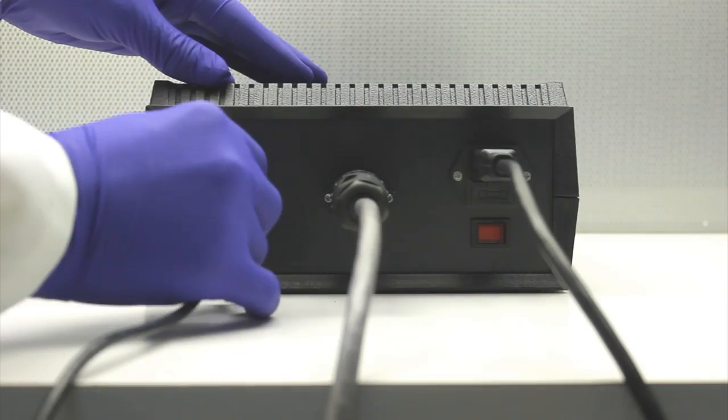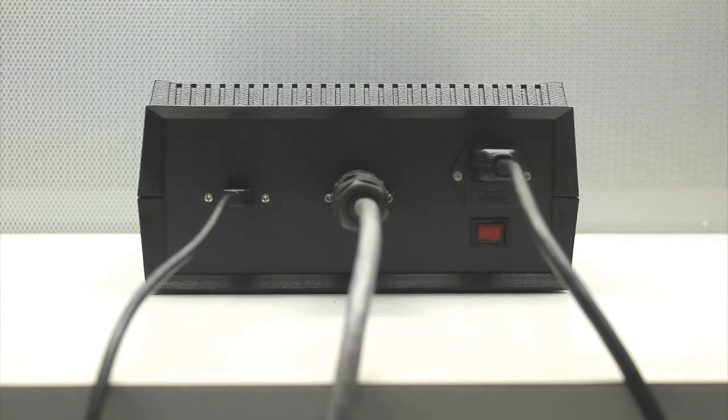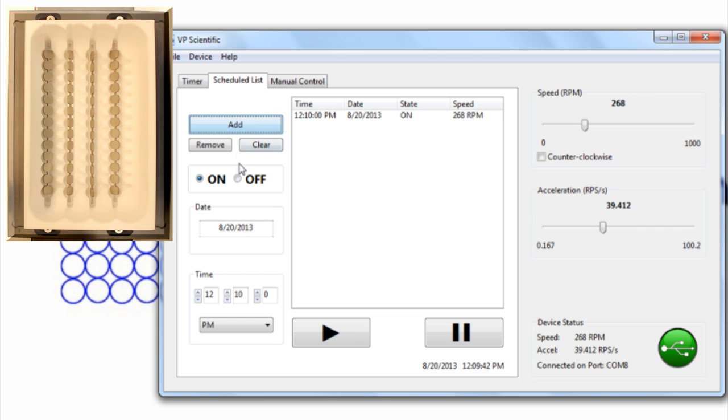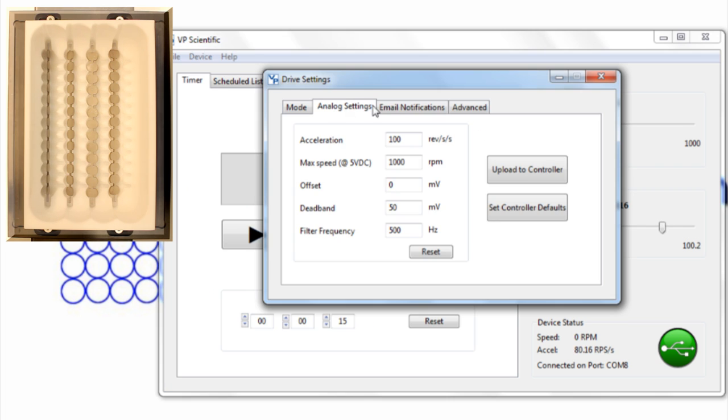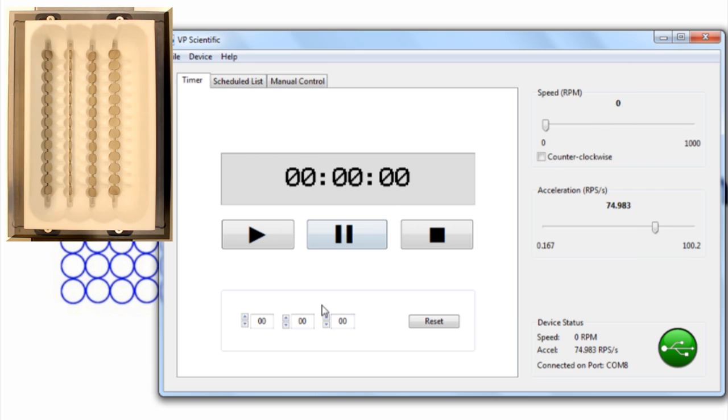They can also be controlled by computer, making it ideal for robotic integrations. This easy-to-use software allows users to set up schedules and timed runs, receive email alerts, determine acceleration and deceleration rates, determine and record precise RPM speed, and many other functions.